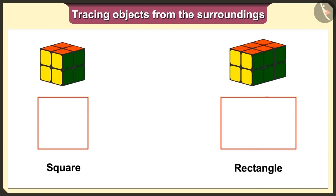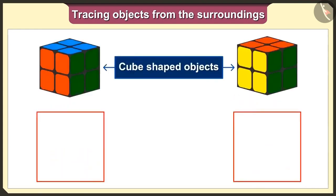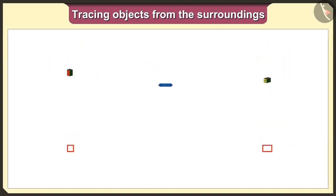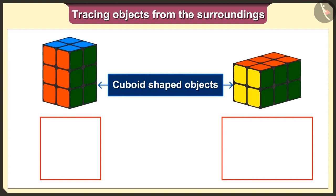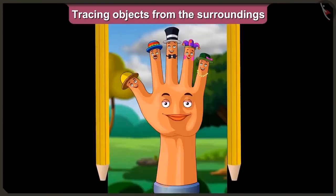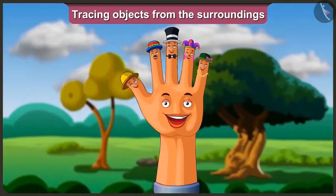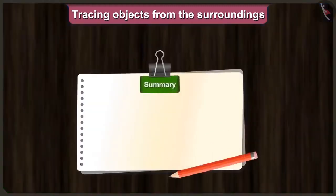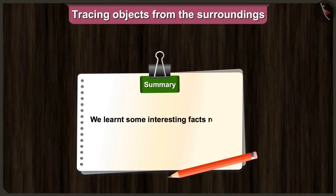Now I understand that the shape we get when we trace the cuboid is not a big square but a rectangle. So remember: if we keep the cube-shaped toy in any way and trace it, we will always get a square shape. And for the cuboid, we will always get either a square or a rectangle shape. Today we learned some interesting facts related to cube and cuboid-shaped objects.